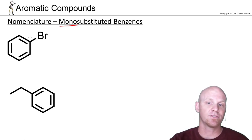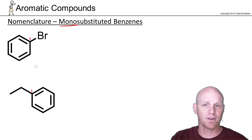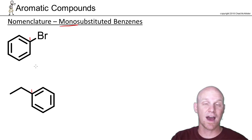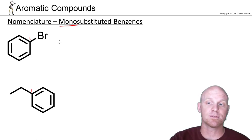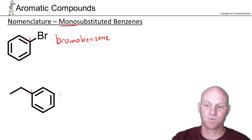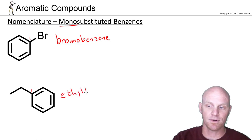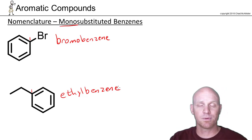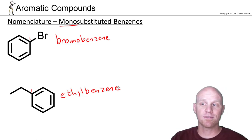With only one substituent it has to be located at carbon number one of the benzene ring, so the position number is not included in the name. This is simply named as the substituent followed by benzene — so 'bromobenzene' for a bromo group, and 'ethylbenzene' for an ethyl group. Simple monosubstituted benzene has nothing more to it than this.